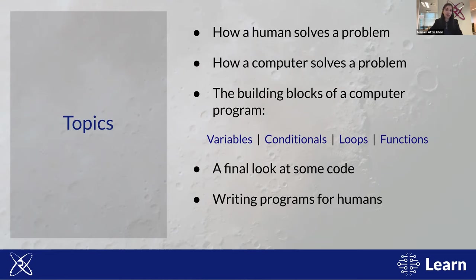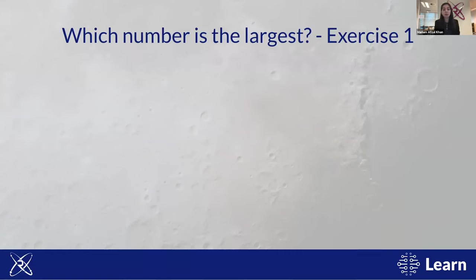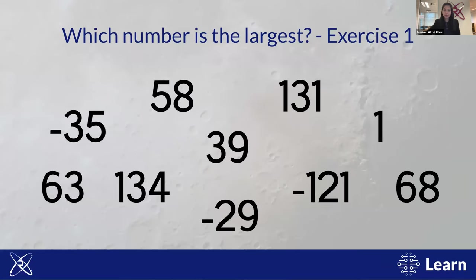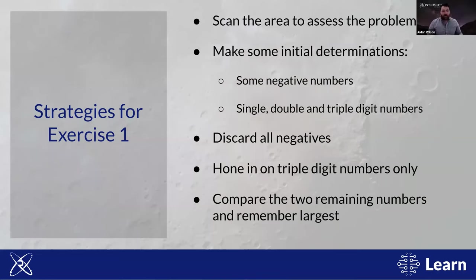On to our first exercise — how a human solves a problem. We're going to put a bunch of numbers on screen for about four seconds. Identify the largest number, and pay special attention to the thought processes you go through. After the exercise we'll discuss strategies for how most people might have solved this problem. You probably identified pretty easily that the largest number was 134.